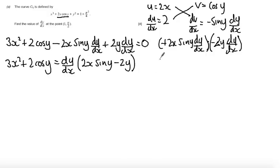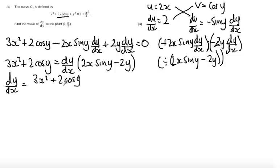And inside the bracket, I'm going to get left with 2x sin y minus 2y. So now I can divide both sides by 2x sin y minus 2y. And I'll reverse the sides as well, so now what I'm going to get is dy/dx is equal to (3x² + 2 cos y)/(2x sin y - 2y). And so now we have an expression for dy/dx.